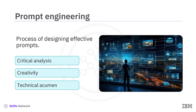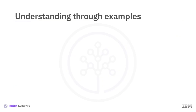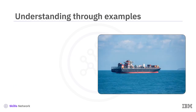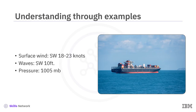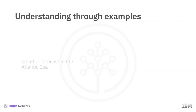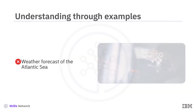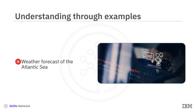Let's understand this through an example. A ship is sailing through the Atlantic Ocean. To plan his voyage, the ship's captain wants to know the precise weather forecast for a specific location at a specific time. In this case, providing the model with a simple prompt such as 'weather forecast of the Atlantic Ocean' may not get the desired results. To get the most accurate results, the captain will have to engineer the prompts. When designing the prompt, the captain needs to define the context to include details.